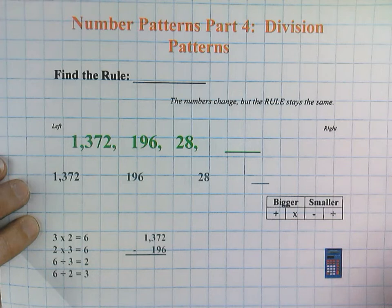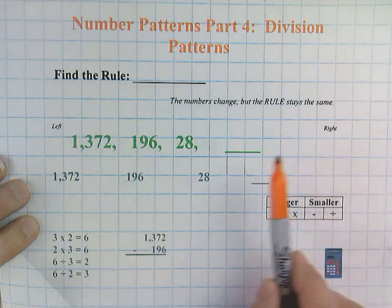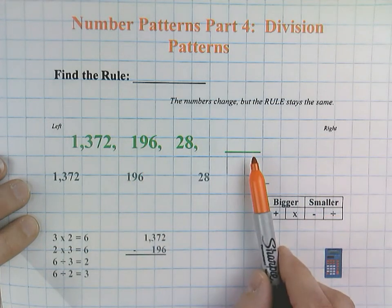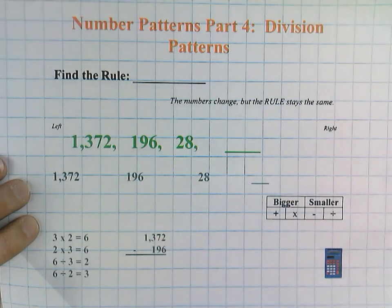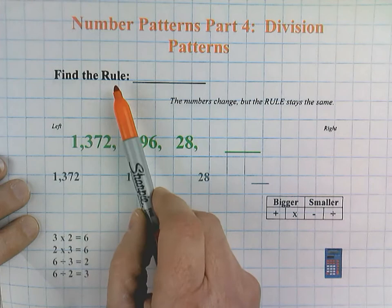Remember, a number pattern involves a set of numbers that usually run from left to right, and the numbers are changing each time, and it's our job to figure out what is happening to them. Are we adding, are we subtracting, multiplying, or dividing, and then by how much? And that is called the rule.